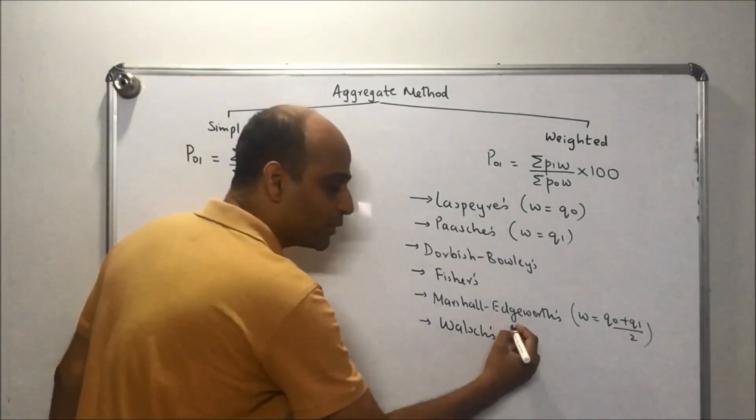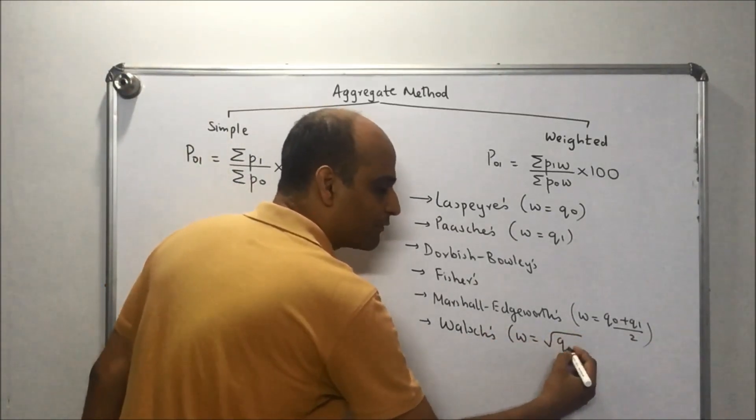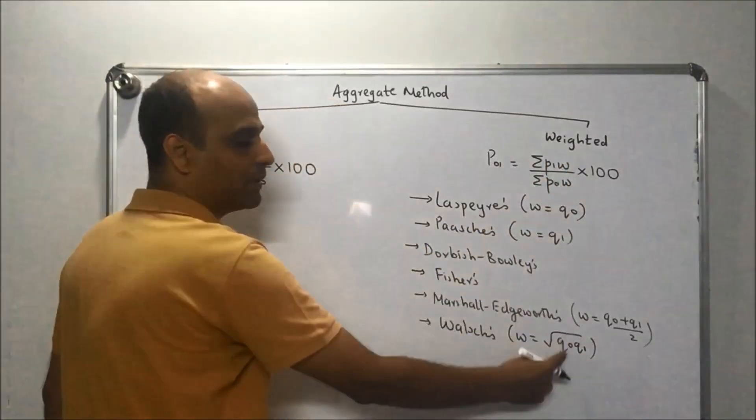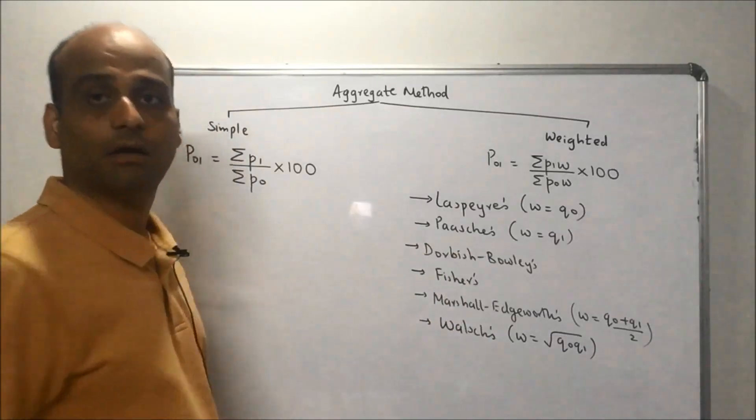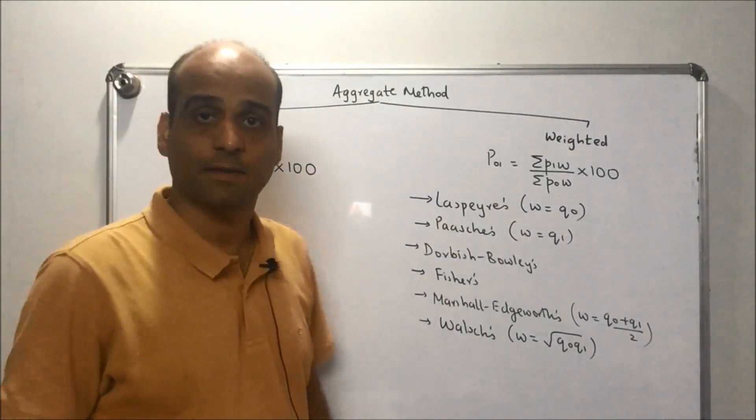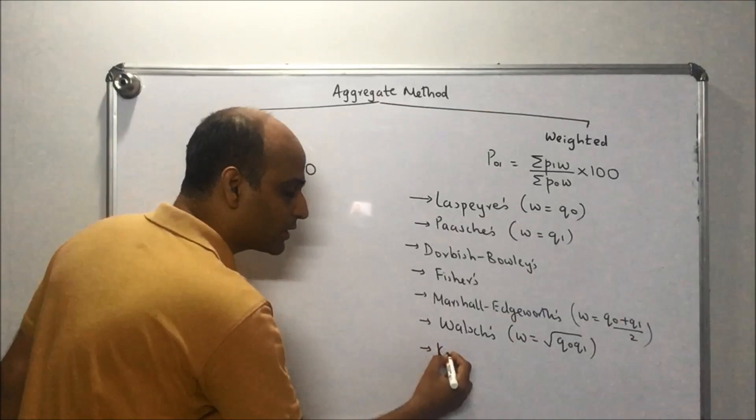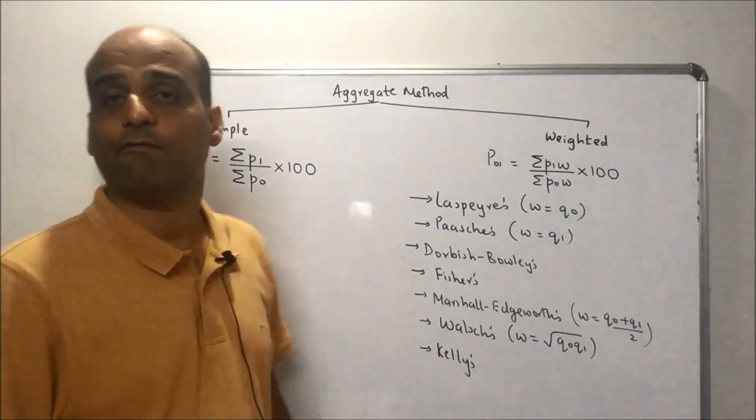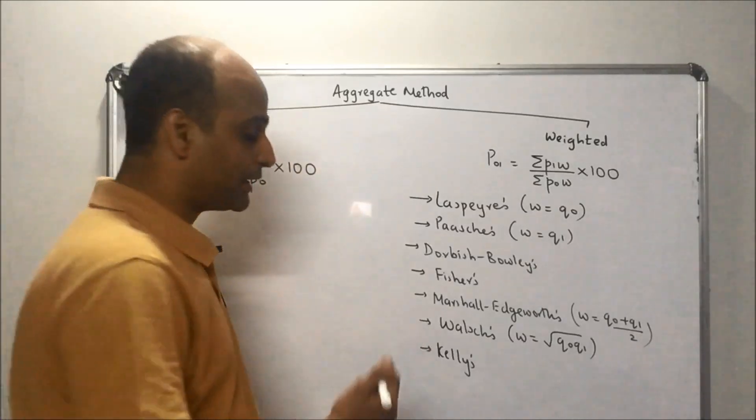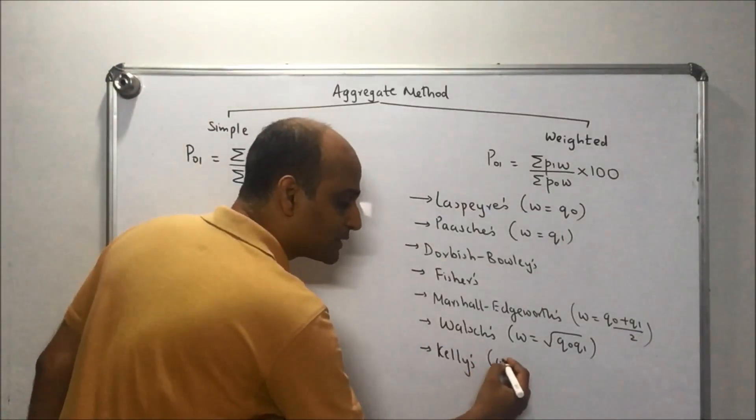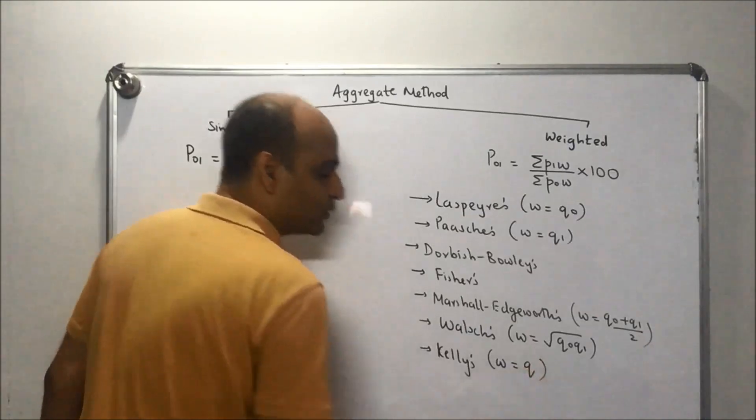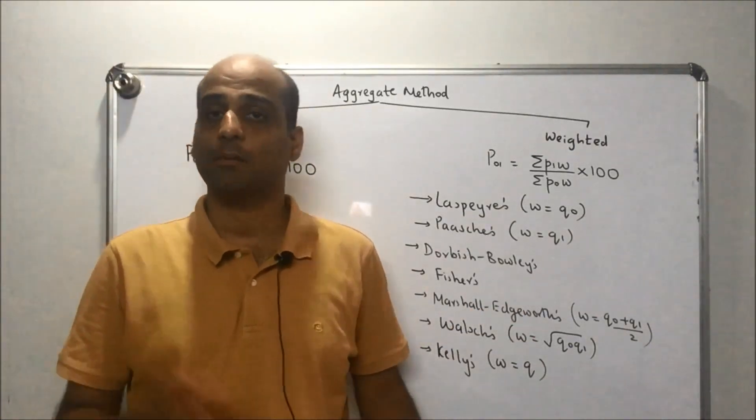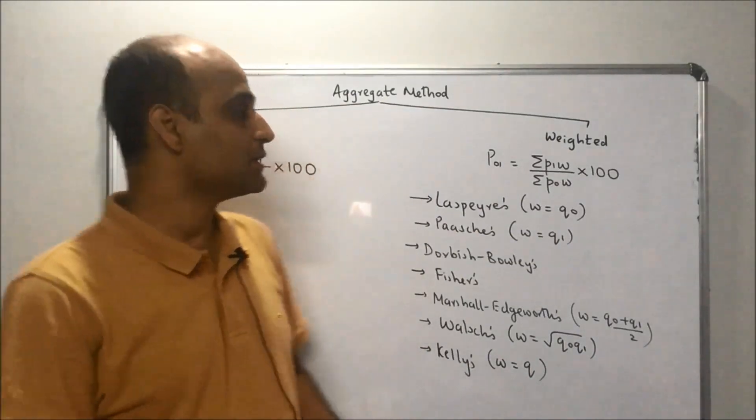Next comes Walsh index. In Walsh index, W is considered as root of Q₀Q₁. If I just replace W by root of Q₀Q₁, I get the Walsh price index. The last in this category is Kelly's index, also called the fixed weight aggregative index. In case of Kelly's index, W equals Q, where Q is the quantity of a year lying between the base year and the current year.